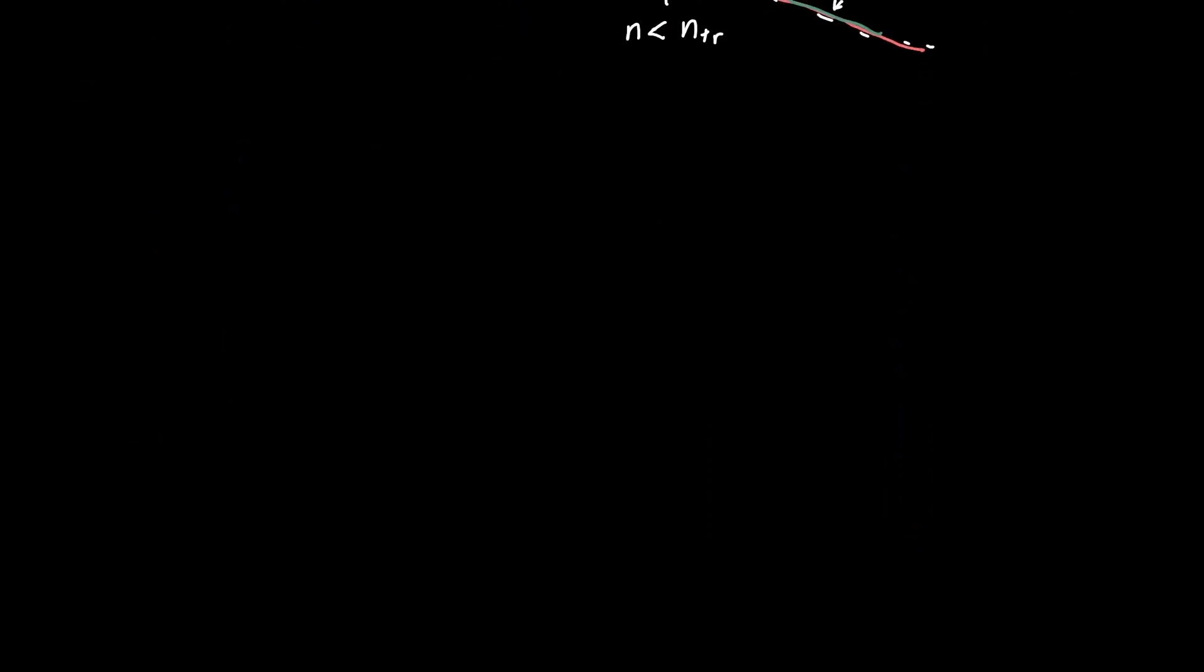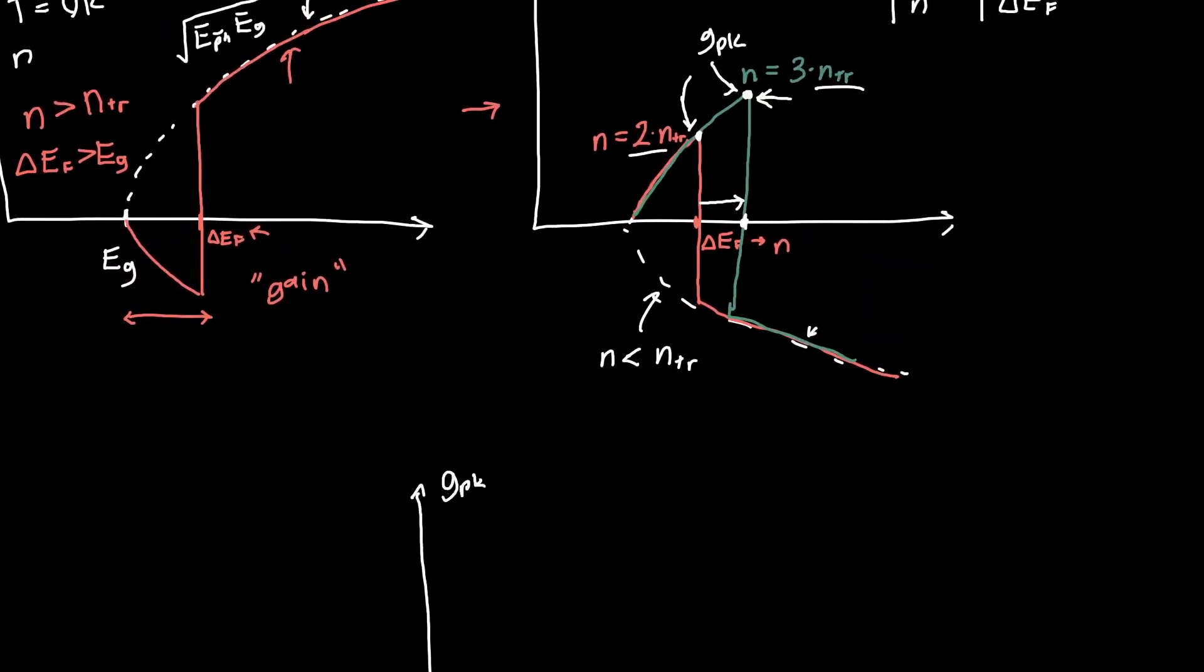And you can plot this peak gain as a function of the carrier density, and it turns out you'll get something like this. So we've got carrier density on the x-axis and we've got our peak gain on the y-axis. And these two curves just correspond to individual points on this curve, so we've got one peak gain here and one peak gain here, for example, for two and three times the transparency carrier density.